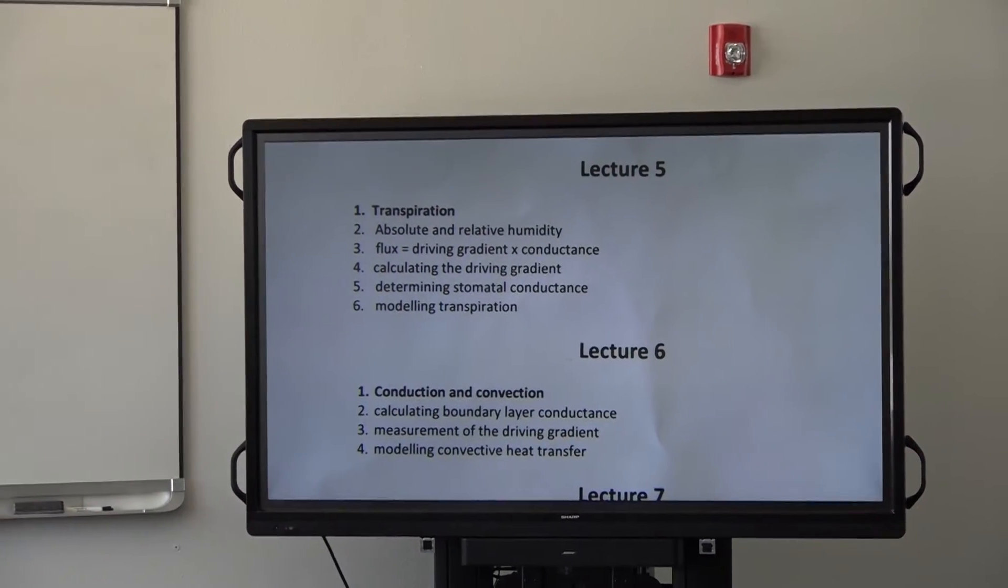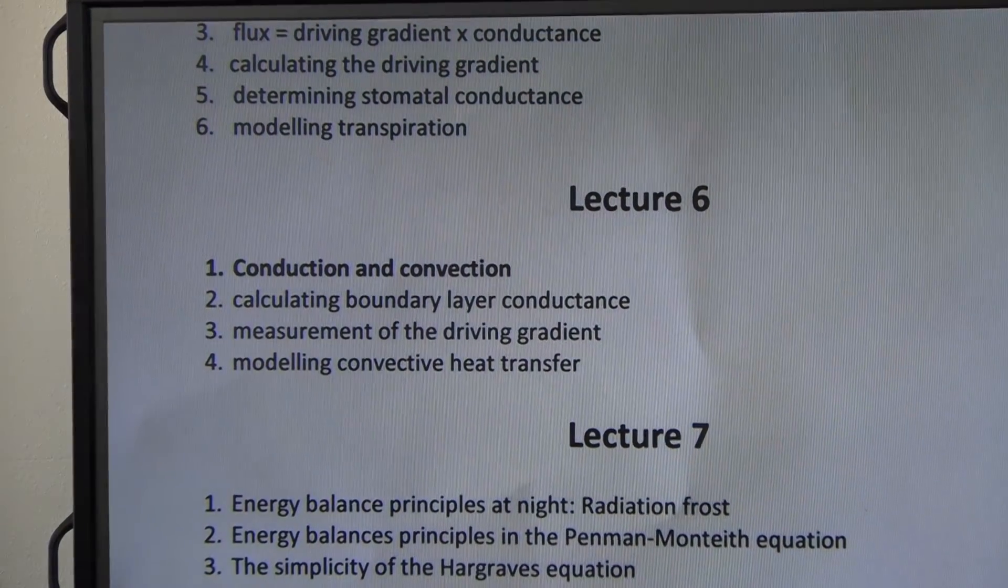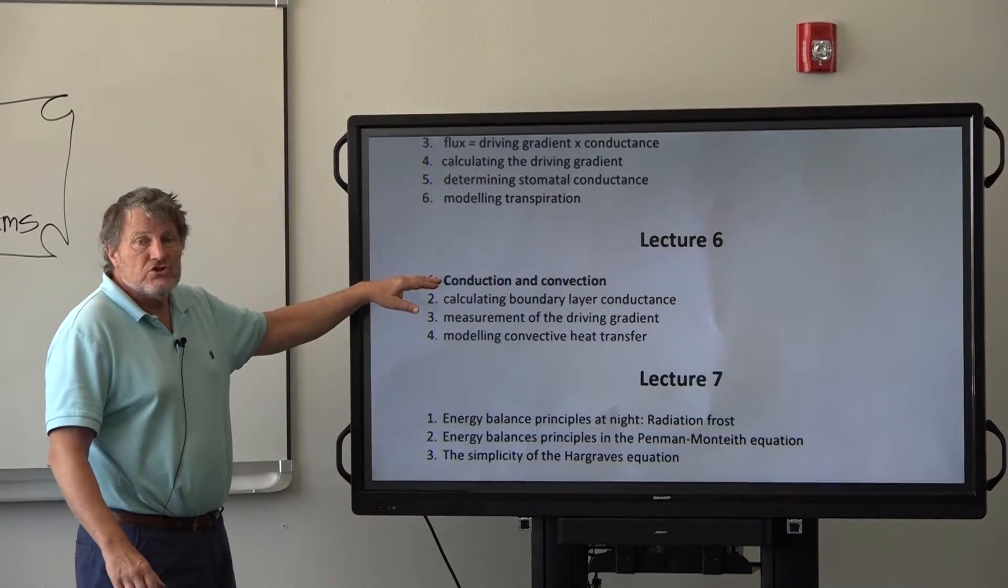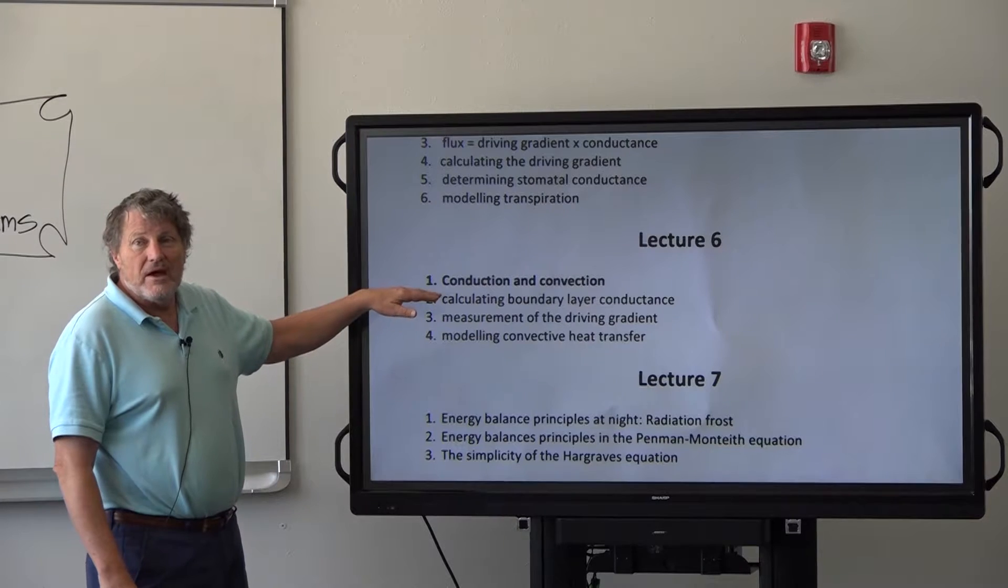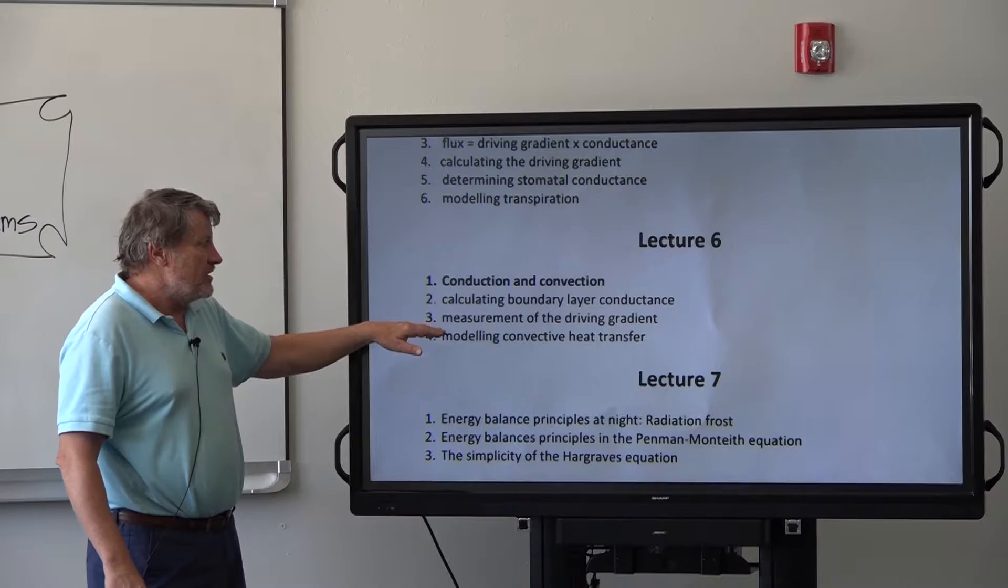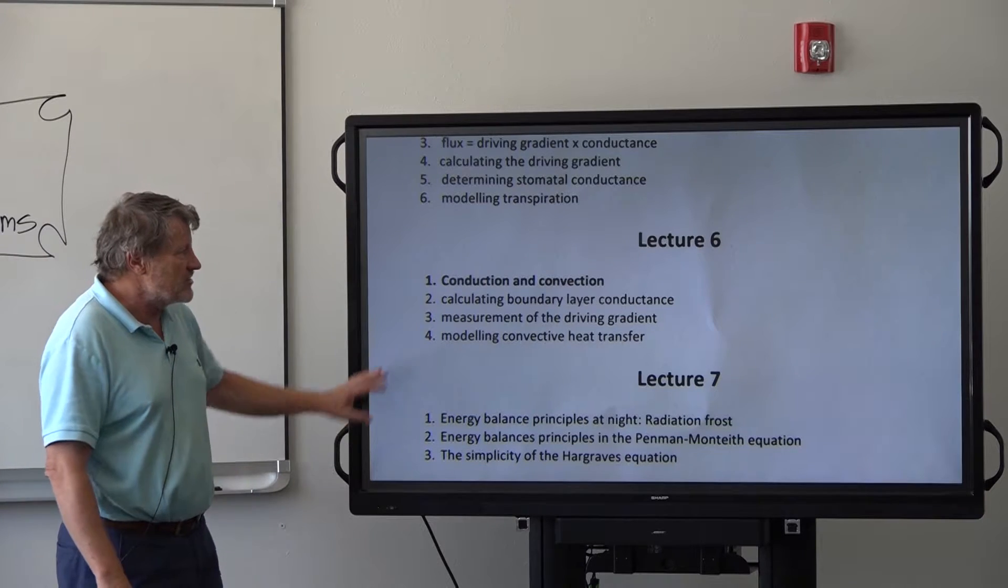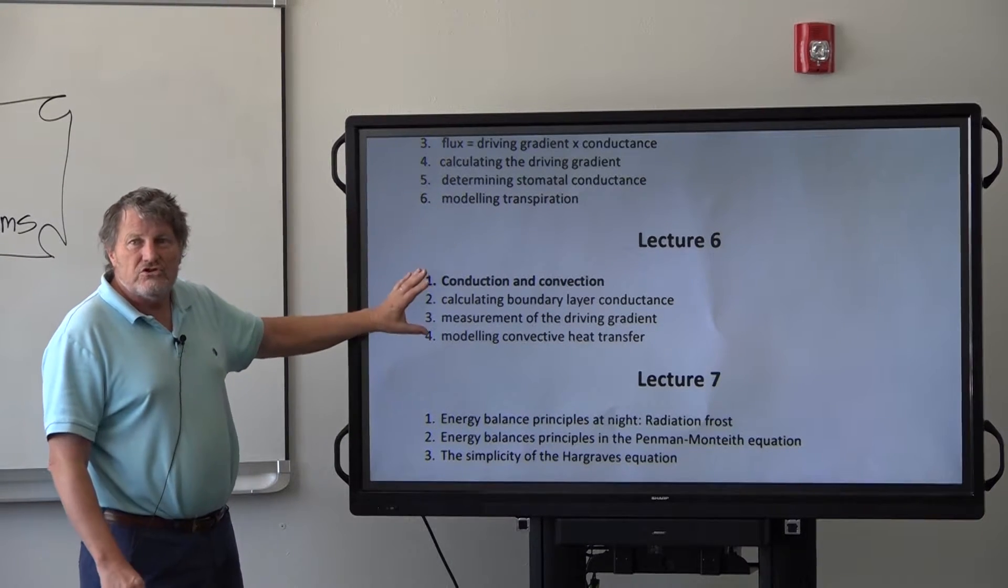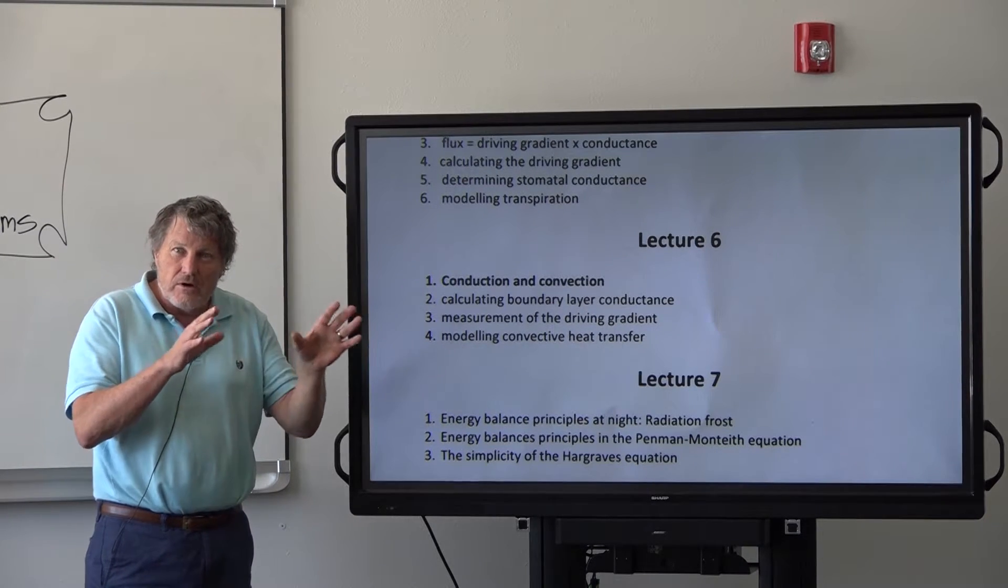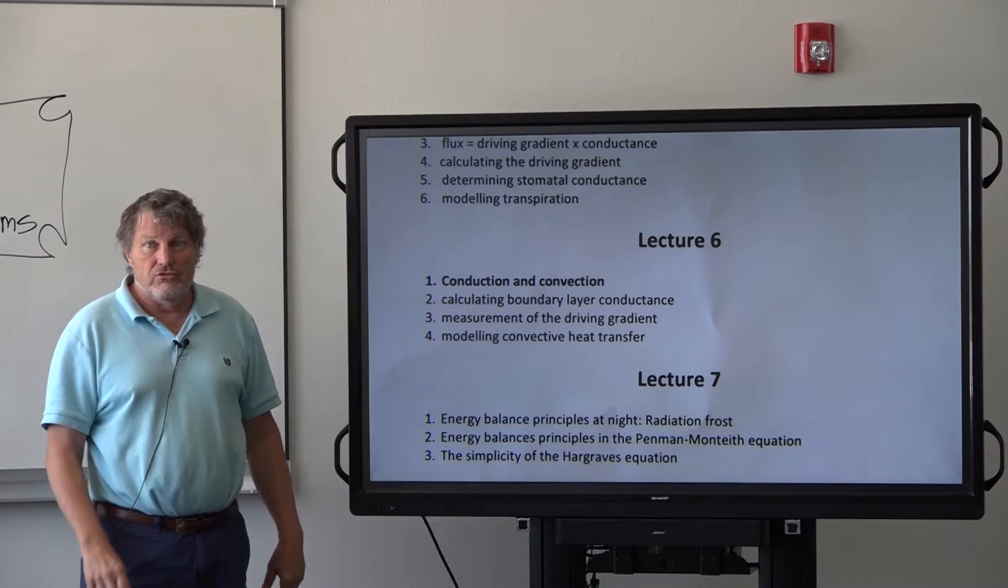Lecture six. I'll move it up just a bit. Conduction and convection. The next big component part of this. It's hot air blowing away. Hot surfaces blowing away to cold surfaces. That's driven by boundary layer resistance or boundary layer conductance. And so how do we measure that? And how do we model the movement of heat by conduction and convection? These components then comprise the whole energy balance equation and the component parts. And in the end the goal is to calculate the movement of water through the system.